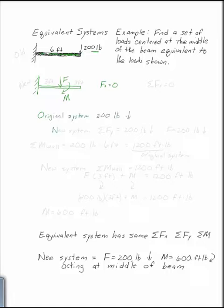So my new system has to have this same sum of the forces in the y direction. This has to be 200 pounds down. So F in my new system has to be 200 pounds down.